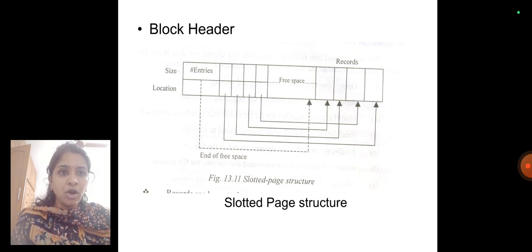And this is the block header. There is the size and then the location. So the entries will be available for the records, and then there will be an end of free space.